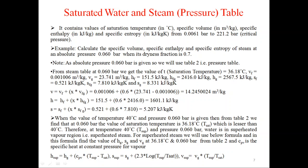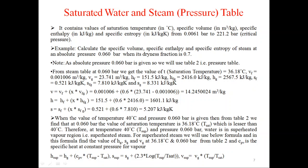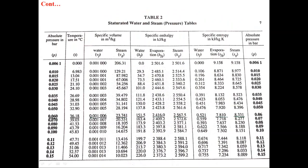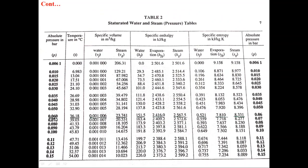We have taken an example in which we have to find the specific volume, specific enthalpy, and specific entropy of steam at absolute pressure 0.060 bar when the dryness fraction x is 0.7. As absolute pressure 0.060 bar is given, we will use Table 2 — the pressure table — because the first column is pressure-based. From steam Table 2 at 0.060 bar, the saturation temperature is 36.18°C.